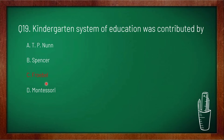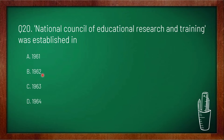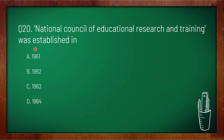Question 20: the National Council of Education Research and Training — its full form is NCERT — was established in which year? NCERT was established in 1961, so option A is correct.